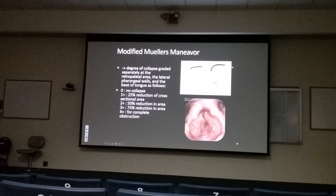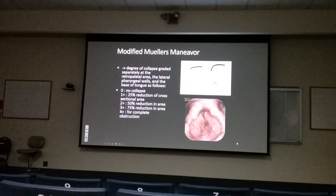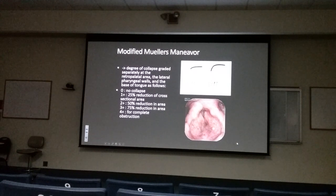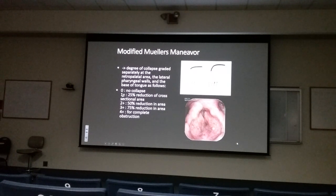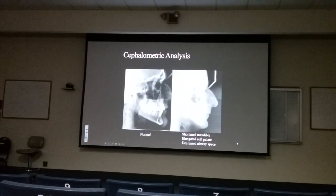Complete airway collapse on scope is called a positive Miller's Maneuver. We score it from zero (no collapse) to four-plus (complete obstruction). Cephalometric analysis — which originated from orthodontics and oral surgery — is one of the best tools for determining the area of obstruction. It gives us the position of the maxilla, mandible, teeth, soft palate, hyoid bone, and airway space.